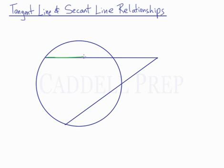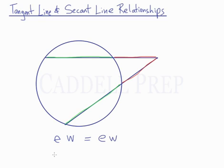This segment here, and also this segment outside the circle. Same thing with this line — we have an interior segment and an exterior segment. The relationship between these line segments we can write as EW equals EW. In other words, exterior times whole equals exterior times whole.